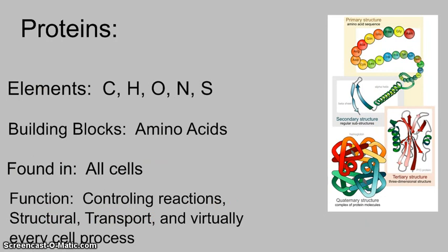Finally, proteins. They are made up of carbon, hydrogen, oxygen, nitrogen, and sulfur. Their building blocks are amino acids, a term many of you have heard in everyday life. Proteins are found in all cells and have an enormous variety of functions — virtually every cell process involves a protein. You'll see them controlling reactions as enzymes, serving as structural components, and helping transport materials within organisms and across cell membranes. Proteins are our utility molecule throughout living systems.